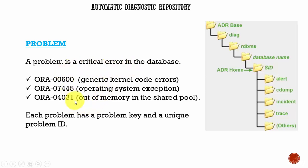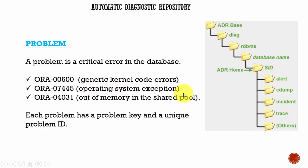Some of the common problems are ORA-00600, ORA-07445, and ORA-04031. ORA-00600 is related to kernel code errors and normally occurs when there are timeouts, file corruptions in the file system, or files are restored incorrectly. ORA-07445 is caused by operating system exceptions like hardware errors, Oracle block corruption, small undo and temporary segments, or software bugs. ORA-04031 occurs when we are out of memory in the shared pool.